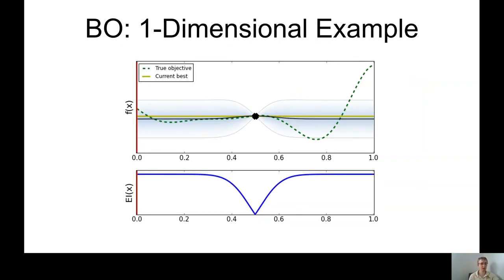So let's look at a simple one-dimensional example. It will hopefully make sense much clearer. Here, the goal is to minimize this green dotted line. This is the objective function f that we don't know, and we only have access to it through evaluations. So we want to find its minimum. And here on the top plot, you can also see this blue shaded area, which is the degree of uncertainty of our surrogate model.